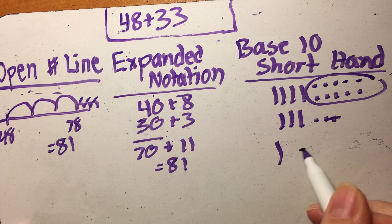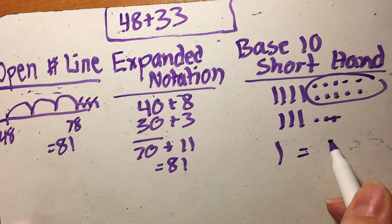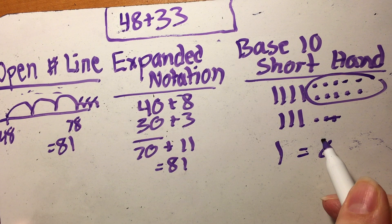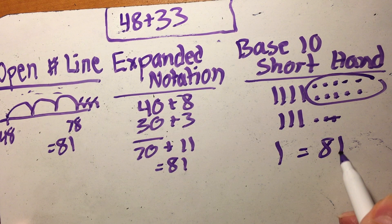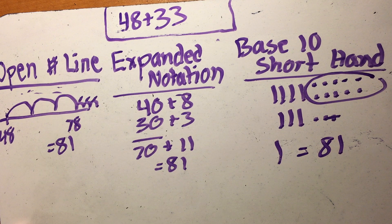So again, your kiddos are going to know that it's 81. Sometimes they'll write a number model, by the way. Number model is just a fancy talk for like an addition sentence or an equation, whatever you may have heard of, like 48 plus 33 is a number model. So anyway, that's a slower version of these three strategies.